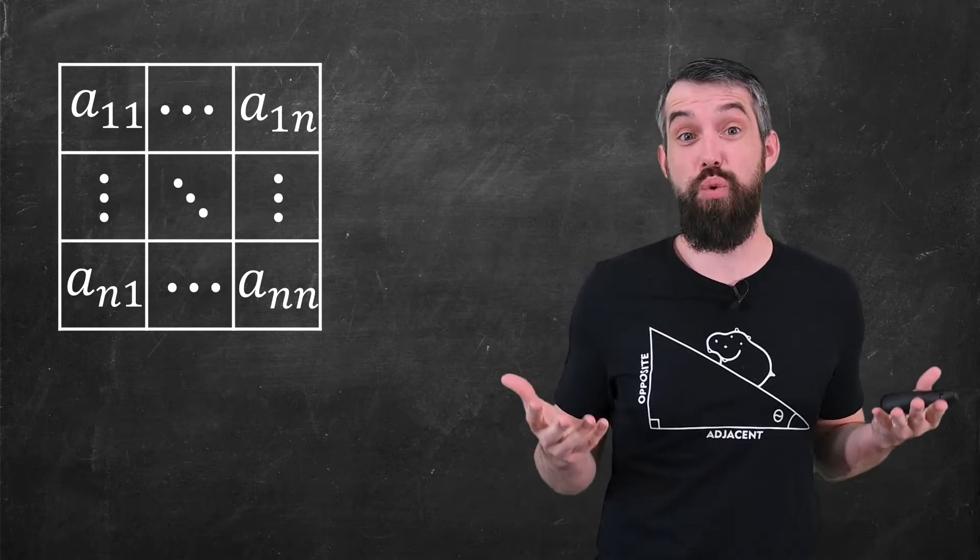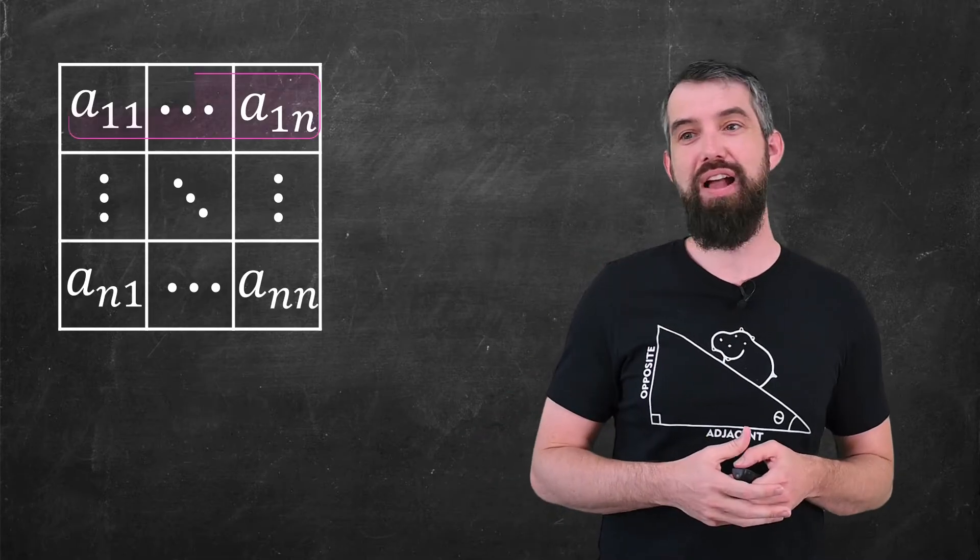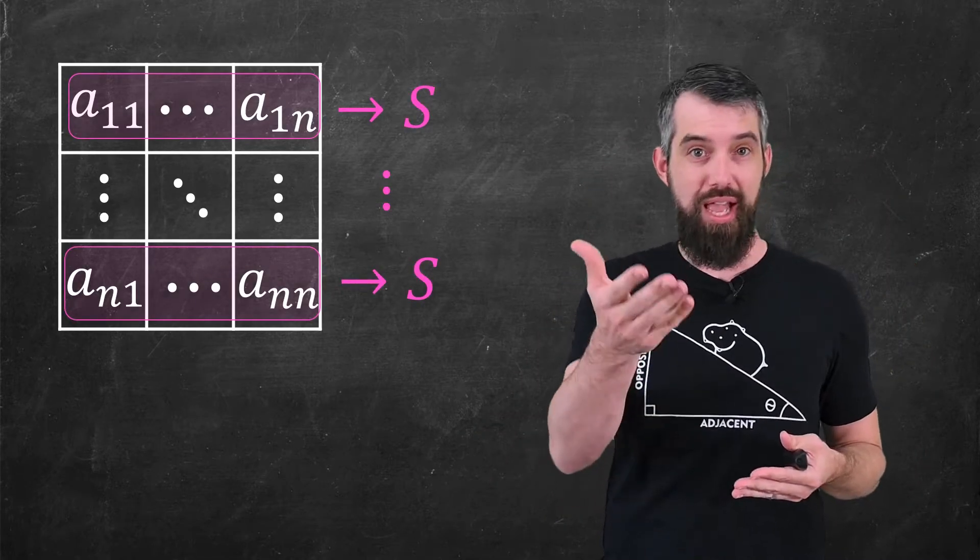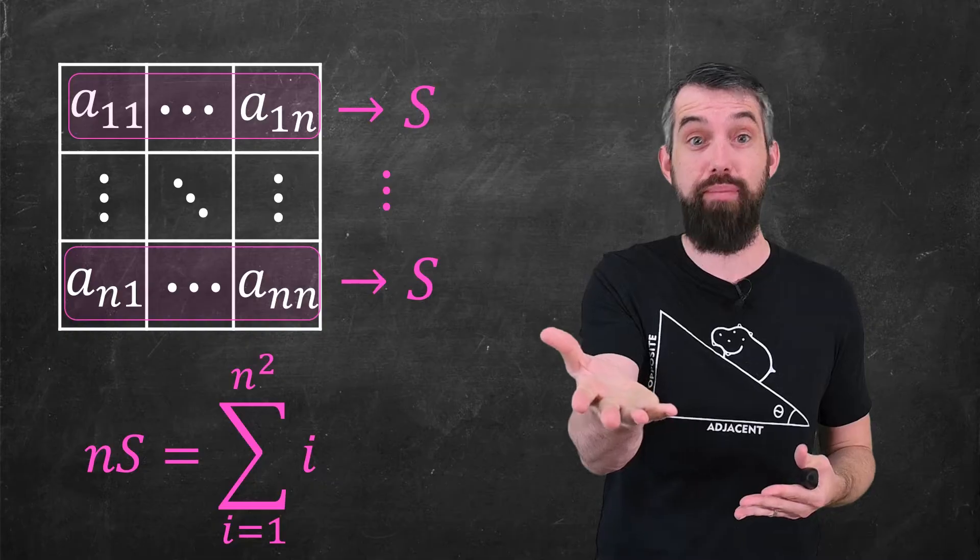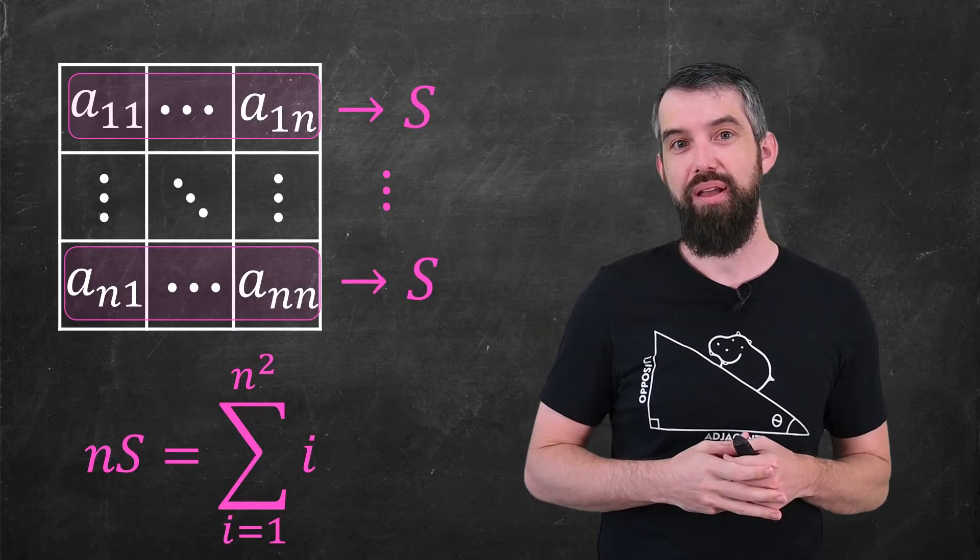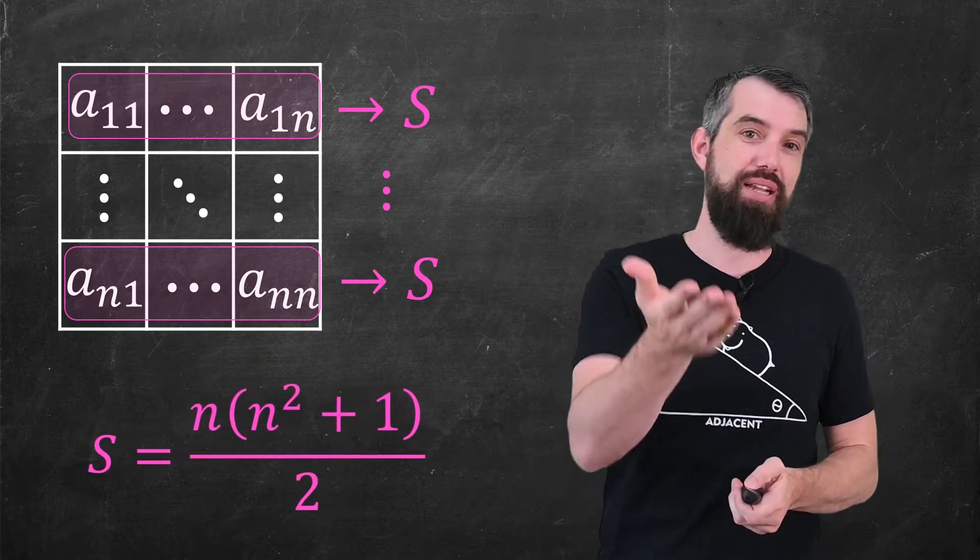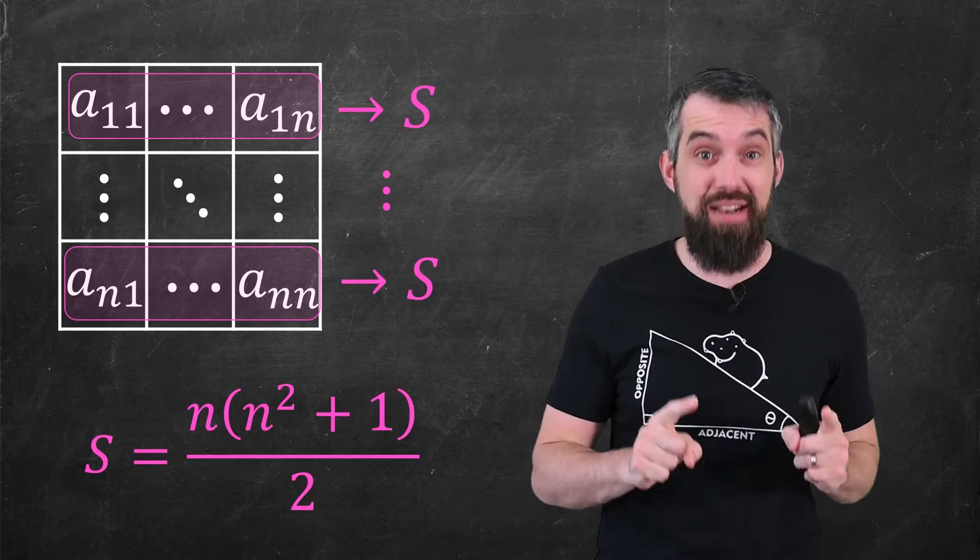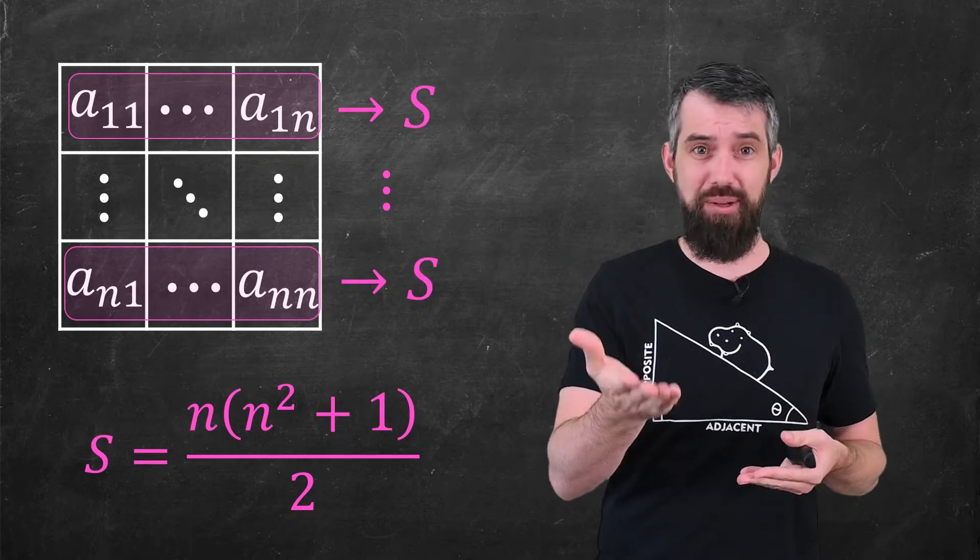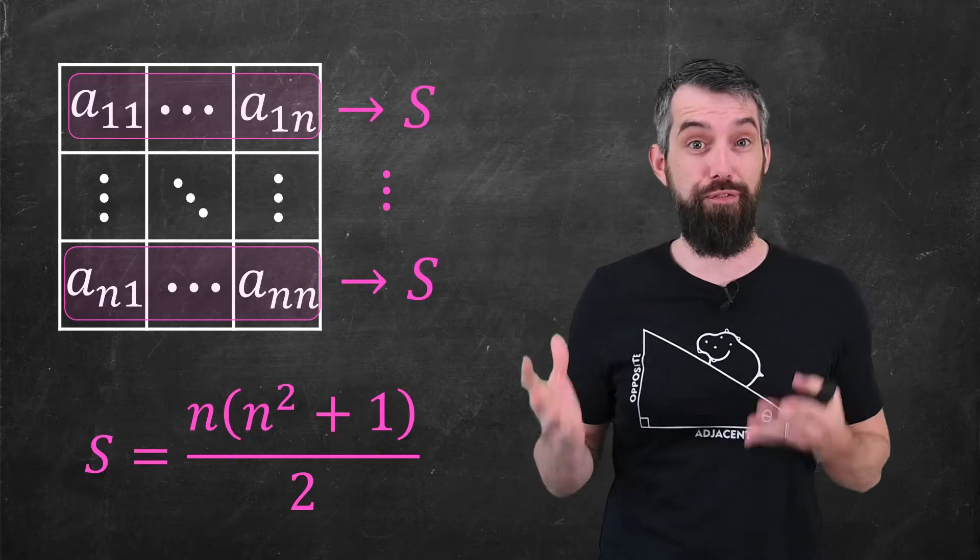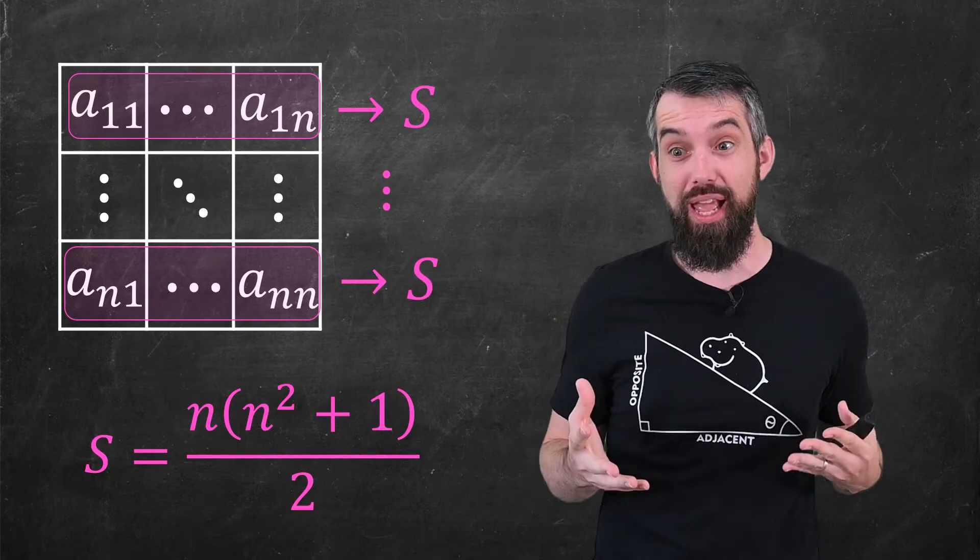I can generalize this to an n by n magic square just the same, where now I'm talking about the numbers between 1 and n squared. But again, if I look at the sum of all of the different rows, say each individual row is equal to s, then what I have is n copies of s is all of the numbers between 1 and n squared added together. But by our formula, I'm just plugging in n squared now, so this is the same thing as n squared, n squared plus 1 divided by 2. Cancel an n on both sides, and now I know that the sum is n times n squared plus 1 divided by 2. For example, in the 4x4 case, 4 squared is 16 plus 1 is 17. 17 times 2 is 34. So as we saw in our earlier image, the sum of every row and column in the main diagonals in a 4x4 case is 34.